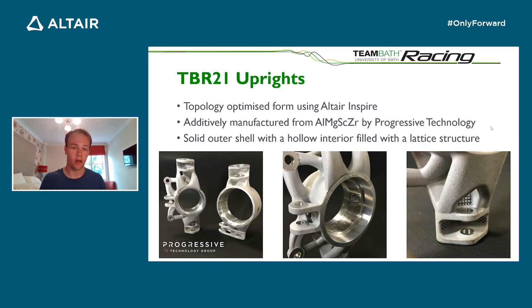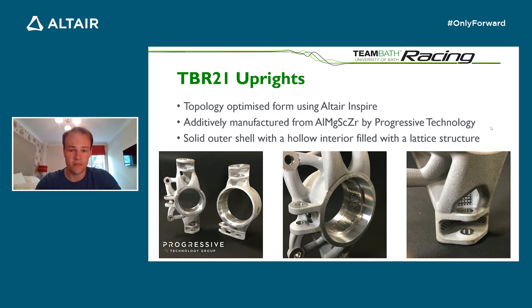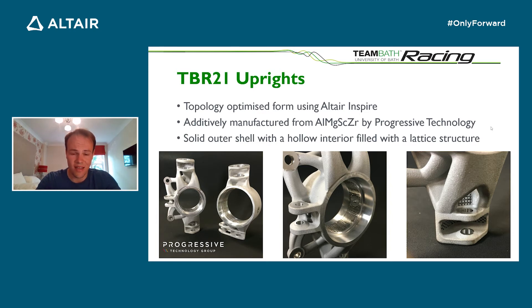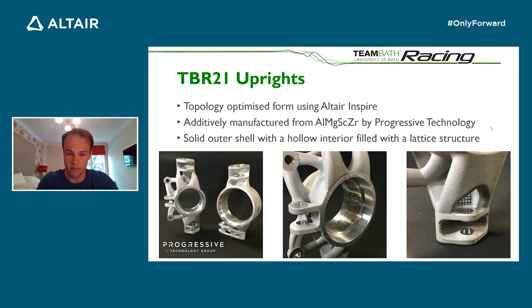So how did we approach this problem? First, we topology optimised the shape of our uprights using Altair Inspire. We then additively manufactured them from a high strength aluminium scandium alloy with our partners at Progressive Technology. New for this year, we made the uprights with a solid outer shell of material, and the inside of the uprights are hollow, filled with a lattice structure — a diagonal, very small scaffold structure connecting all of the outer shell of the part together. You can see images of the front and rear uprights on screen, with portions of the lattice structure exposed so you can see up close what that looks like.